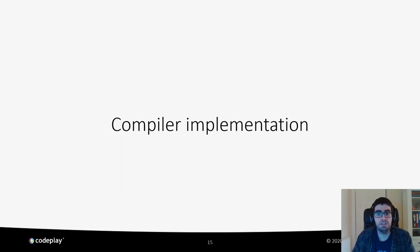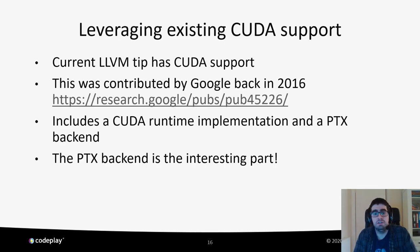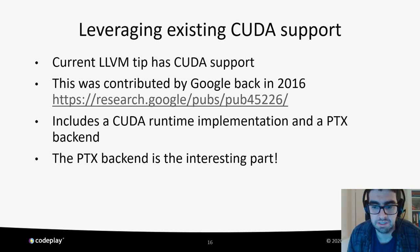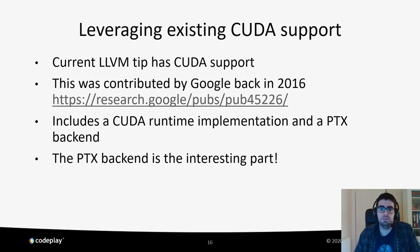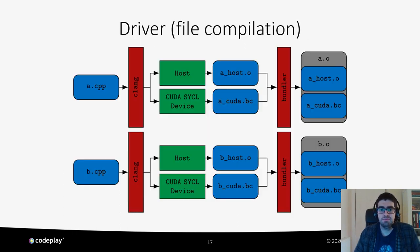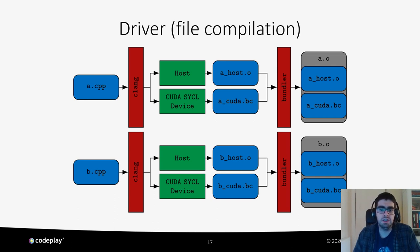Let's look in more detail at how the compilation of SYCL for CUDA kernels works and how we have implemented this on LLVM. There is already support for CUDA on LLVM tip, contributed by Google in 2016. This includes a CUDA runtime implementation and PTX backend. The PTX backend is what we are going to use to generate code for NVIDIA devices from the SYCL code. The compilation process follows a similar one to the SPIR-V path already in DPC++ for OpenCL. The major difference is that it never goes through a SPIR-V step.